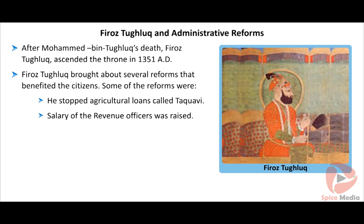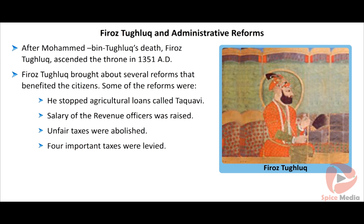Salary of the revenue officers was raised. Unfair taxes were abolished. Four important taxes were levied: Karaj, which was one-tenth of the product cultivated; Kamz, which was one-fifth of the wealth looted during war; Jizya poll tax; and Zakat tax on Muslims for particular religious reasons.